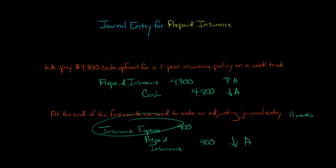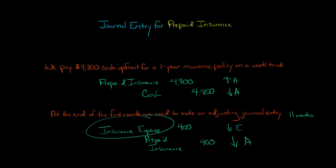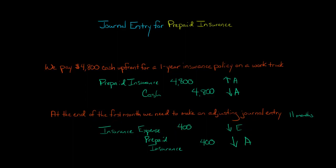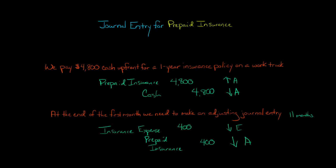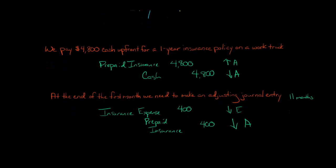What is the effect of debiting an expense? That's ultimately going to decrease stockholder's equity. At the end of the period, expenses get closed out to retained earnings, so equity is going down and assets are going down. At the end of each month, we're going to make the same adjusting journal entry — debit insurance expense and credit prepaid insurance for $400.